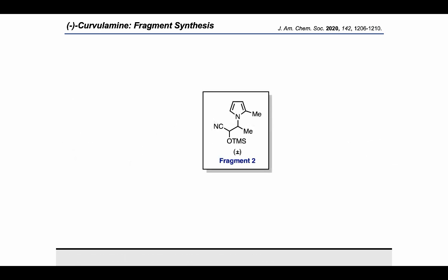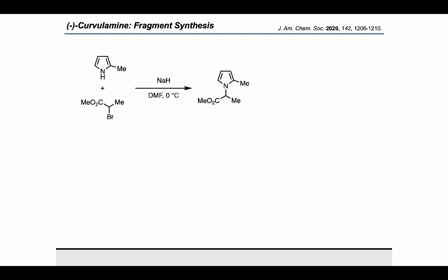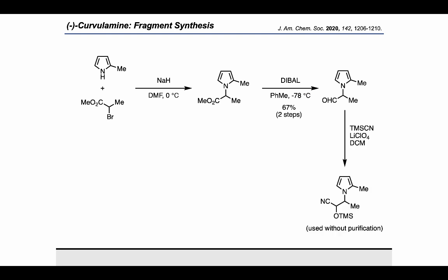For fragment 2, the authors utilized the cyanohydrin as a masked aldehyde in order to use this fragment as an acyl anion equivalent. By using the cyanohydrin rather than the aldehyde, they were able to invert the polarity of the functional group and use it in an umpolung fragment coupling later. To make fragment 2, they took 2-methylpyrrole and alkylated with an alpha-bromoester using sodium hydride. After alkylating the nitrogen, they treated with diisobutylaluminum hydride (DIBAL) in order to convert the ester into an aldehyde. Finally, they masked the aldehyde as a cyanohydrin by treating with TMS cyanide to arrive at the completed fragment, which was used without purification.